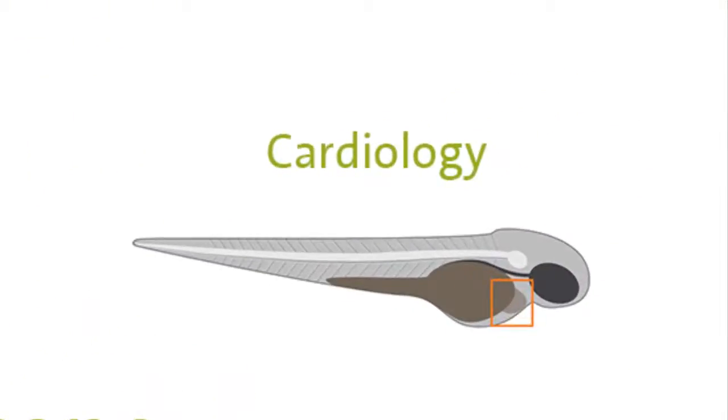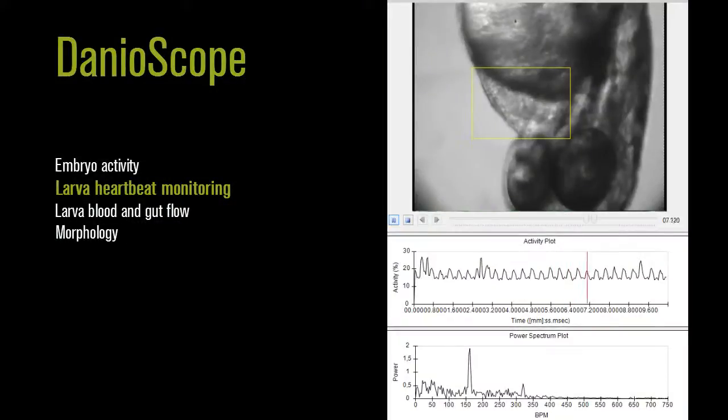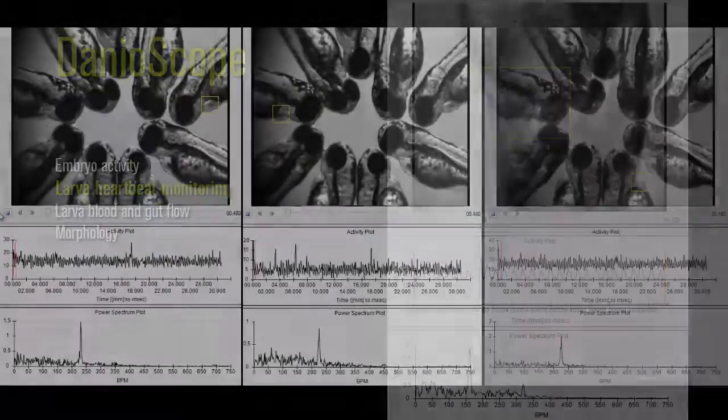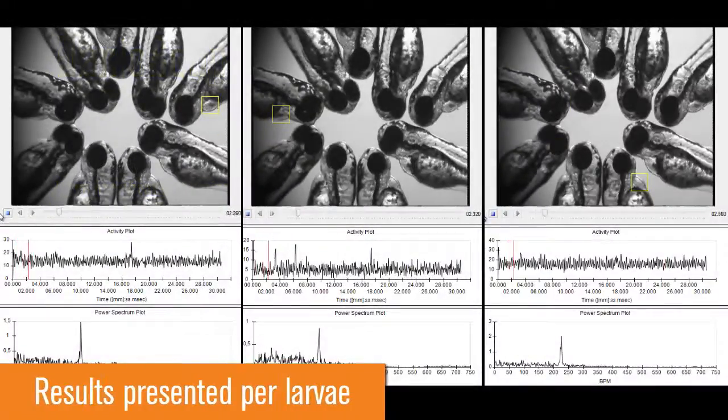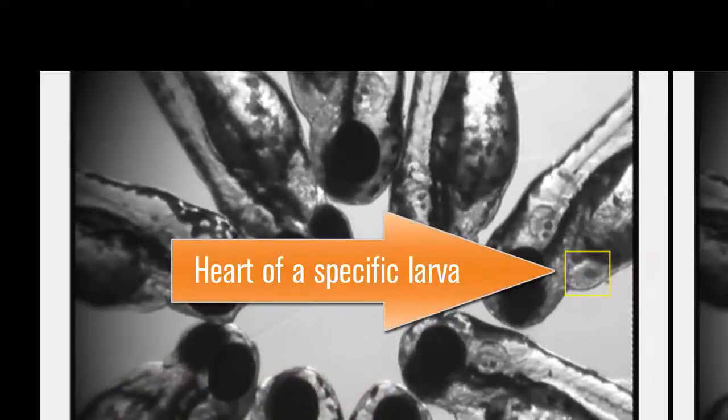You can also measure the heartbeat with DanioScope. Here you can see the heart of one larva selected. Again, you can measure all your animals simultaneously and results are presented per individual.